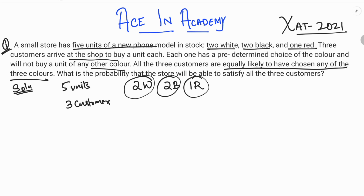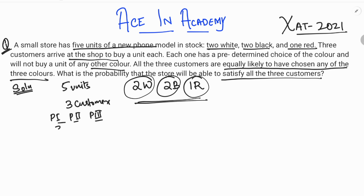We have to find the probability that the store will be able to satisfy all three customers. Let's first calculate the sample space. We have person one, person two, and person three — each can have three choices: white, black, or red. So we have 3 × 3 × 3 = 27 total cases.